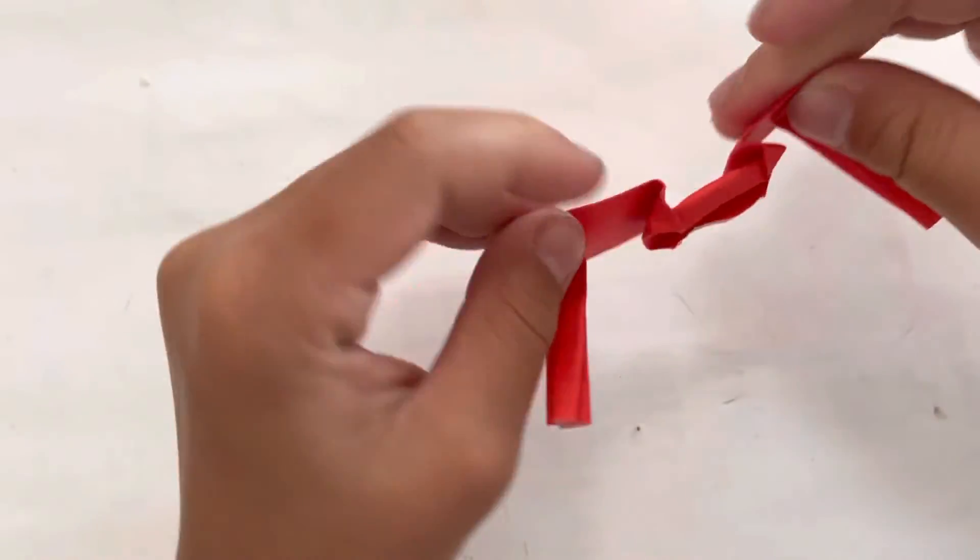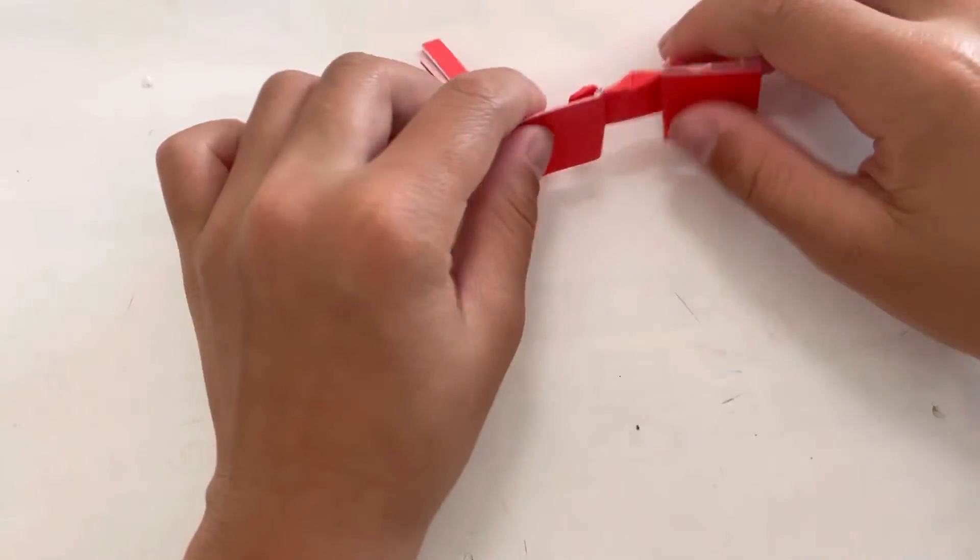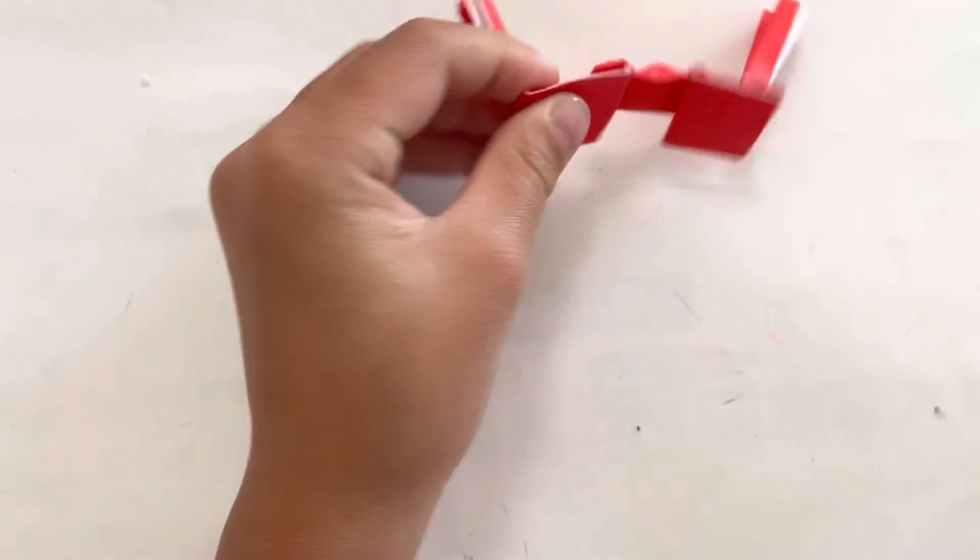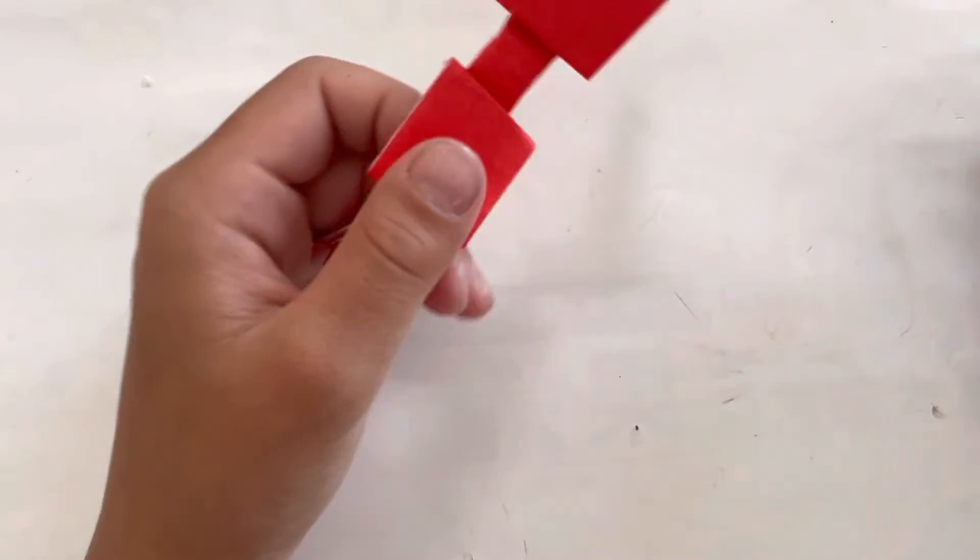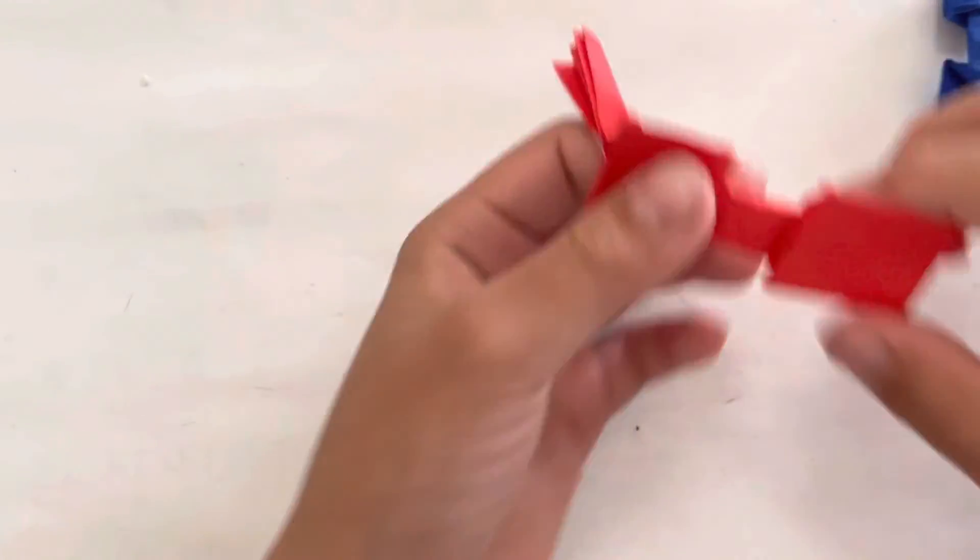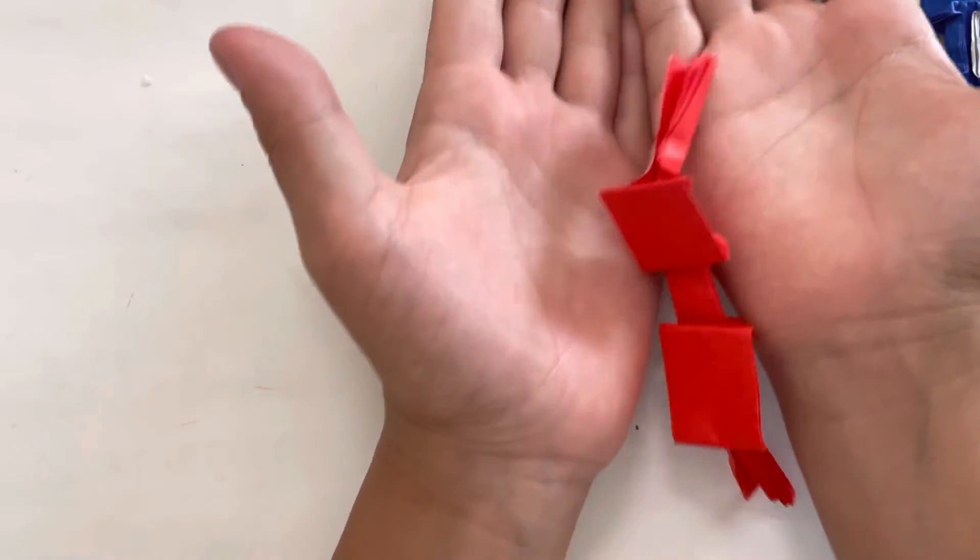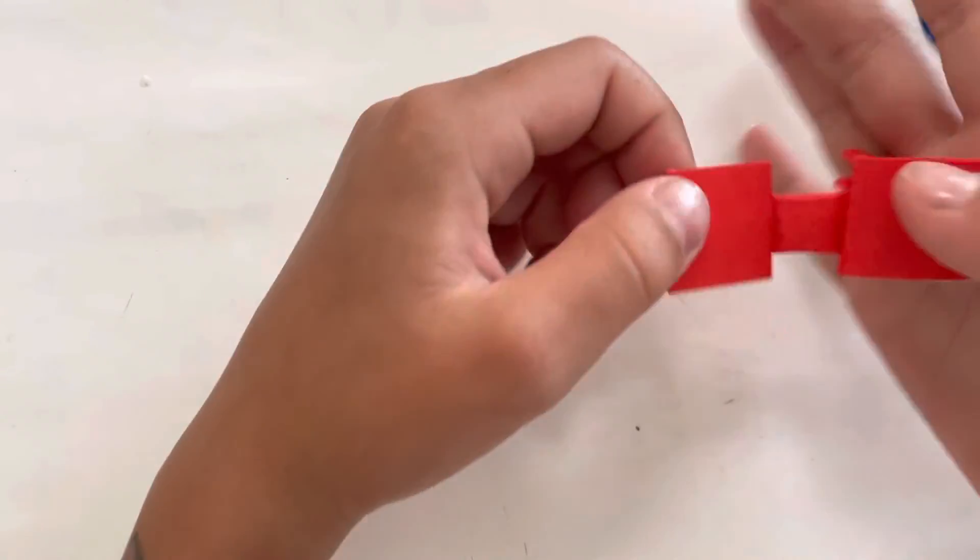So after this, your glasses are done. See? Red and blue. Small and big. Glasses. See? So, yeah. Very easy to make. Origami glasses. Order your glasses now. Yay! Bye!